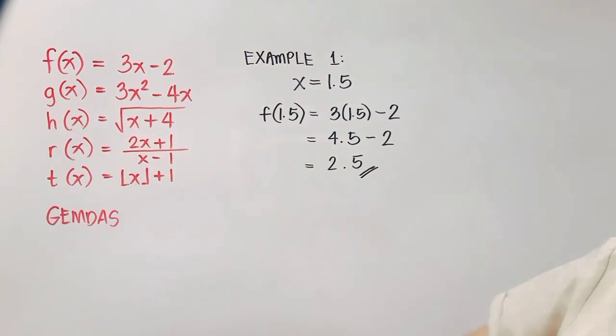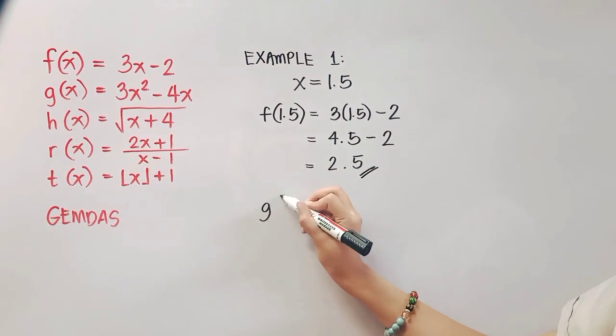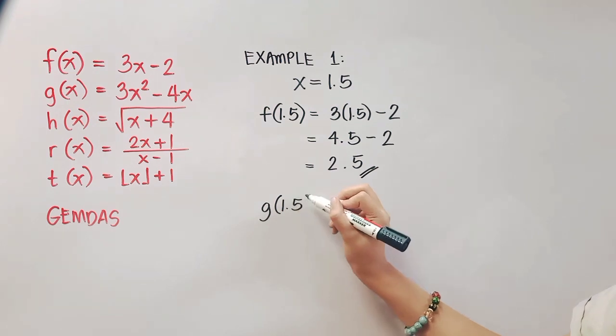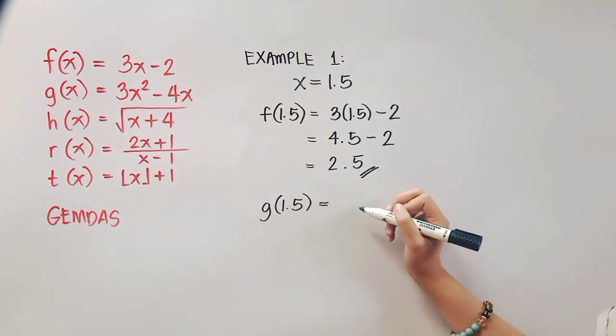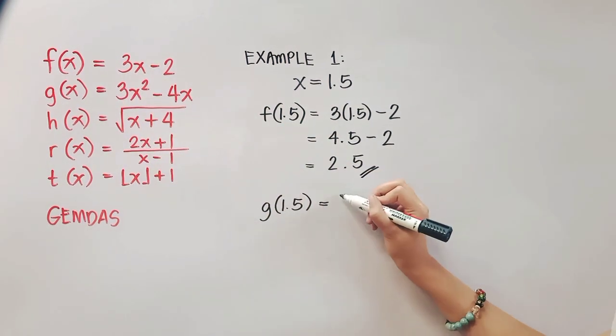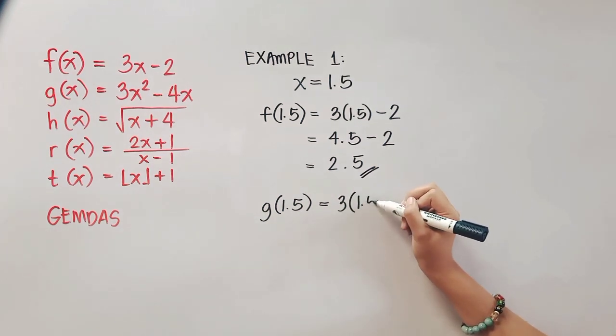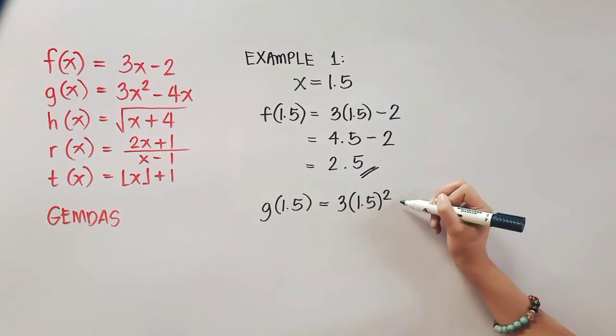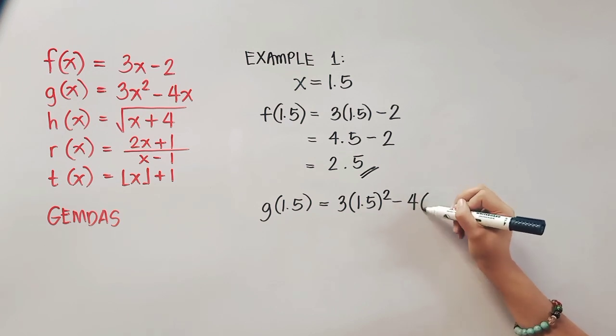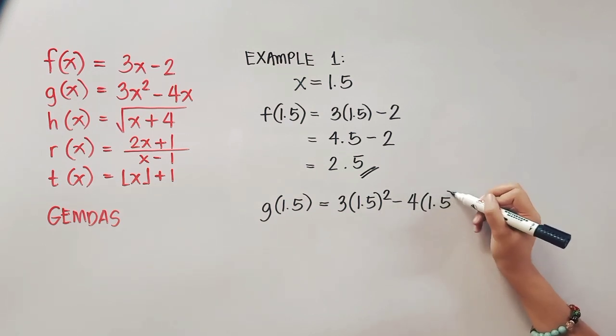So it will give us a final answer of 2.5. Next, let's proceed to g of x. The same thing, g of 1.5 is equal to, simply copy and then substitute the value of x. So that's 3 times quantity 1.5 squared minus 4 times 1.5.